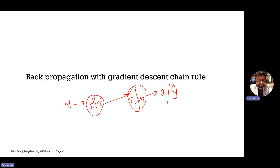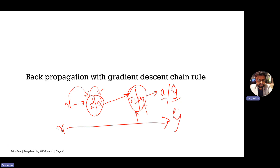We are converting X to Z1, then Z1 to A1, then using A1 we generate Z2, and using Z2 we generate A2, which is Y-hat. So this is how we go in the forward direction — starting from X and generating the prediction Y-hat. This is the forward propagation step discussed in detail in the last video.